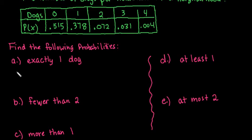For the first one, we're going to find the probability that there is exactly one dog. If I were to randomly select a household, we're looking for the probability that that household has exactly one dog. All we have to do is look at the chart.